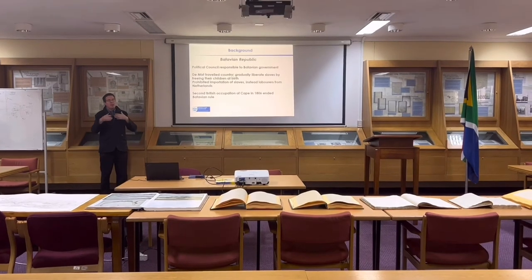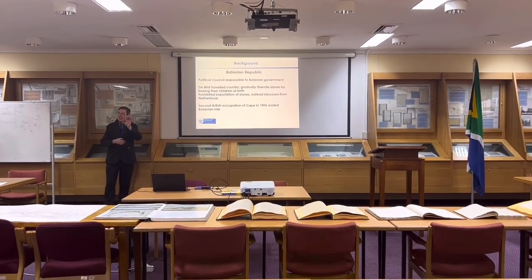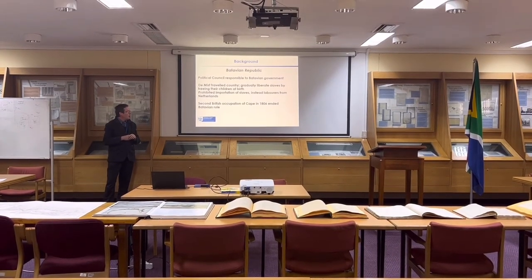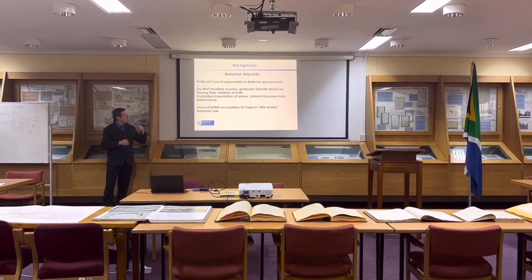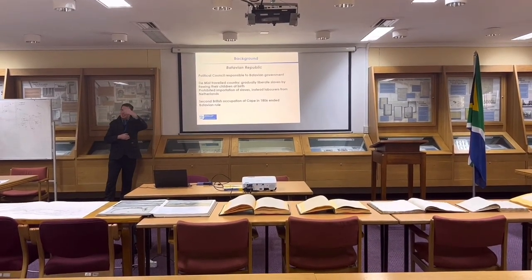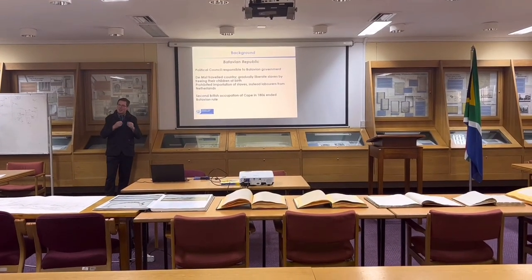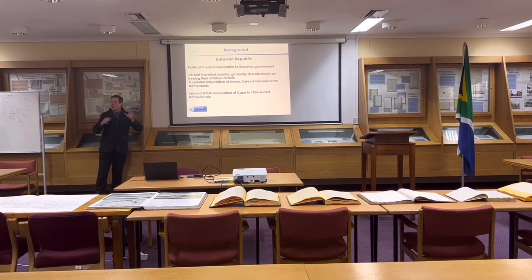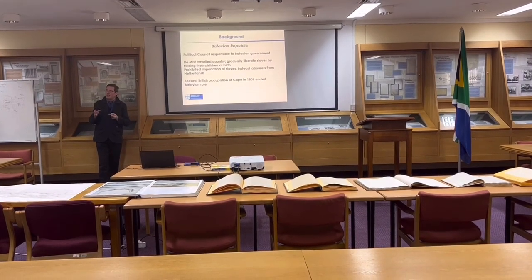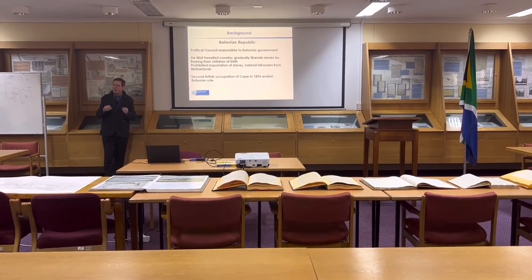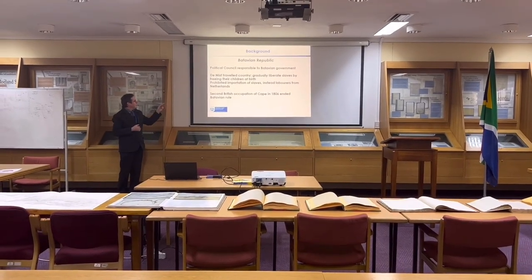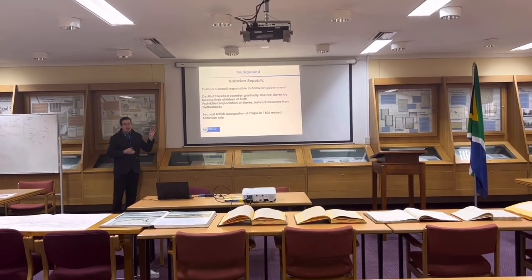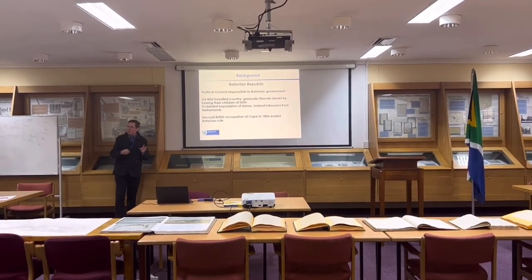De Mist actually achieved the prohibition of further slave importation, but slavery was still in existence at that time. He also wanted to import laborers from the Netherlands to work here instead of slaves. However, formal slavery would only end in 1838 with the emancipation of the slave system in England.